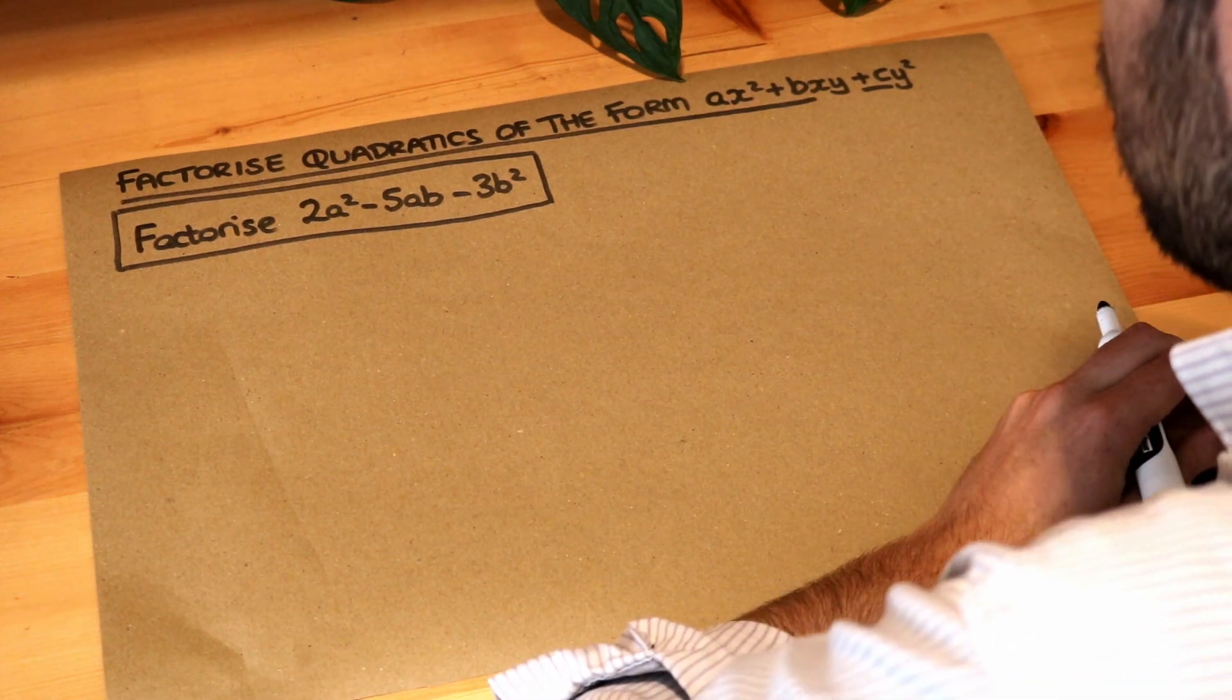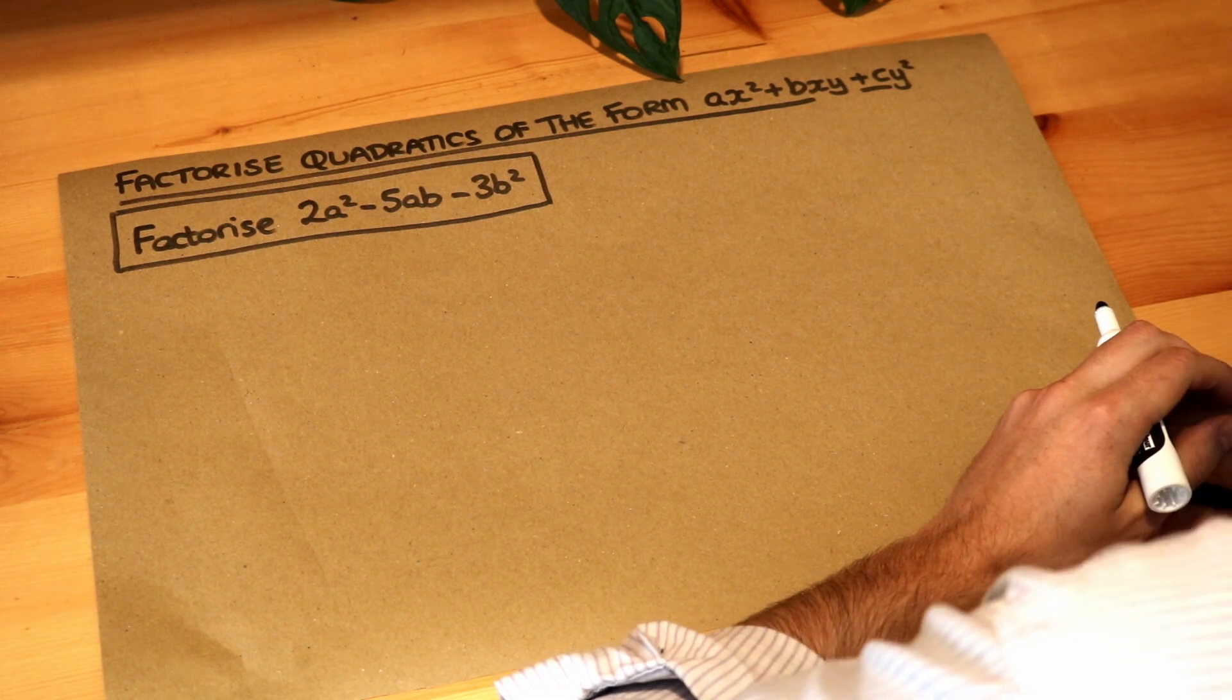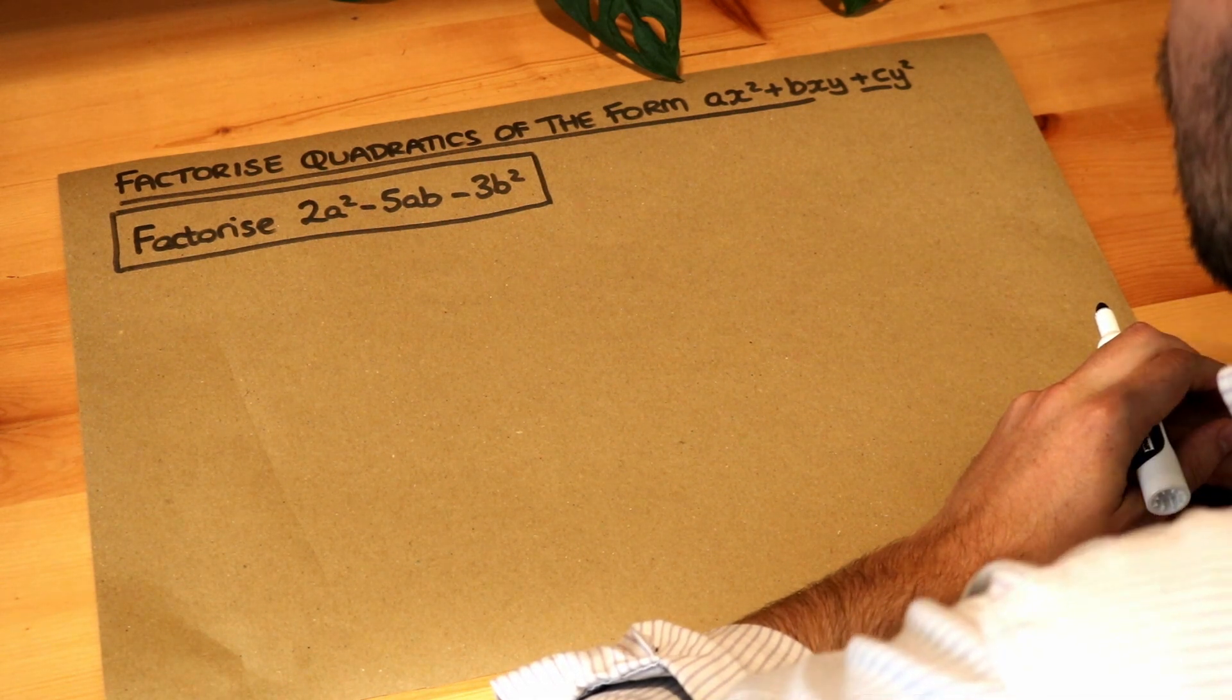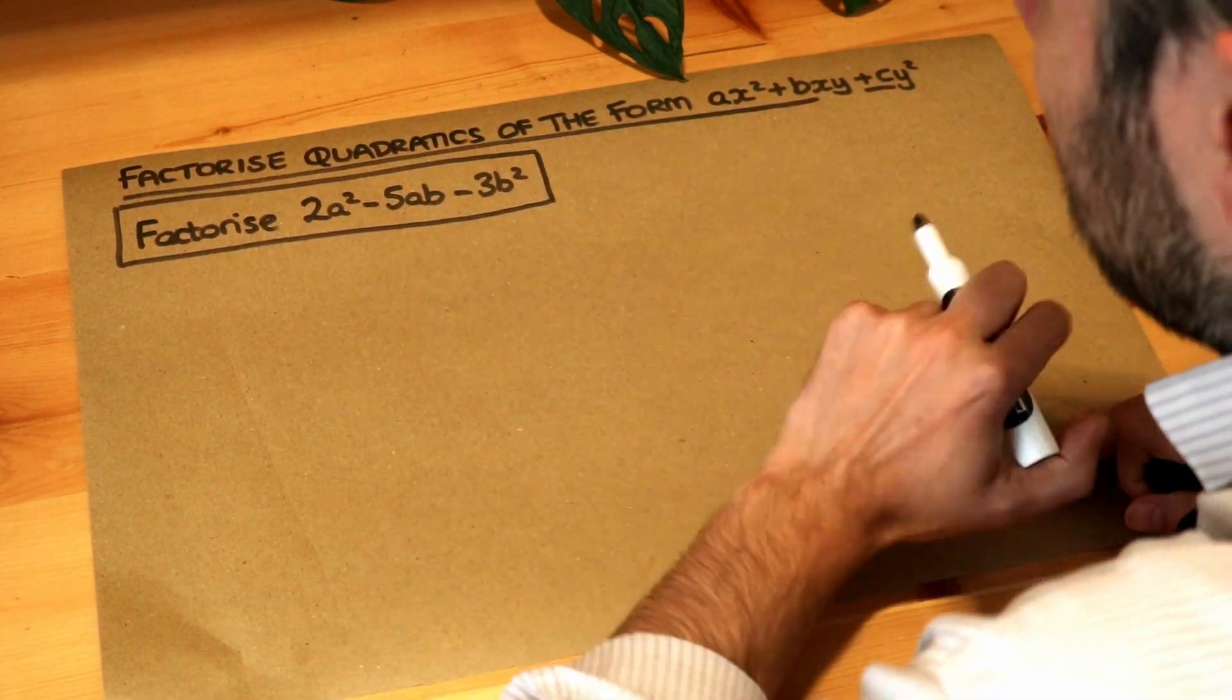Hello and welcome to this Dr Ross video on factorising quadratics of the form ax squared plus bxy plus cy squared. So we want to factorise this expression: 2a squared minus 5ab minus 3b squared.